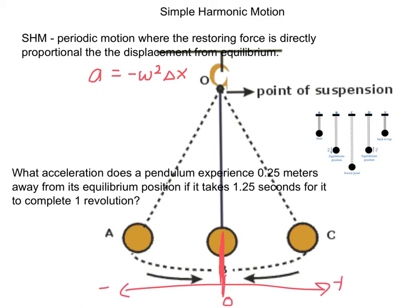If I call everything one way positive and the other way negative, with zero at the equilibrium mark: if I have a positive displacement coming out this way, then I plug in a positive number for delta x, and times negative omega squared, I come out with a negative acceleration — an acceleration pointing back to the left.